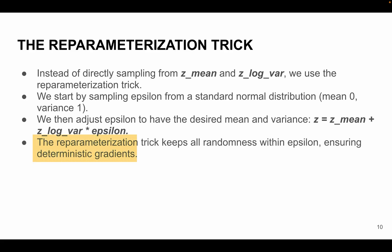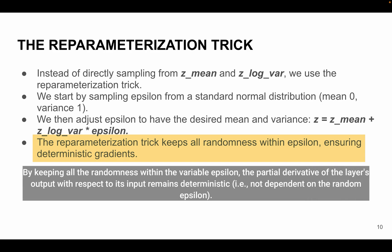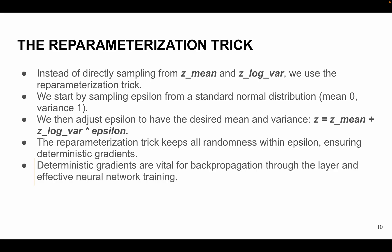Now this technique is called the reparameterization trick and it is very important and significant because it enables gradients to flow backward throughout the layer during training. By keeping all the randomness within the variable epsilon, the partial derivative of the layer's output with respect to its input remains deterministic. What I mean to say is it is not dependent on the random epsilon. Now this deterministic property is very crucial for allowing backpropagation throughout the layer, which is essential for training neural networks efficiently.